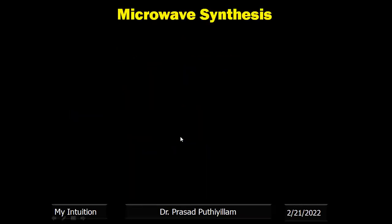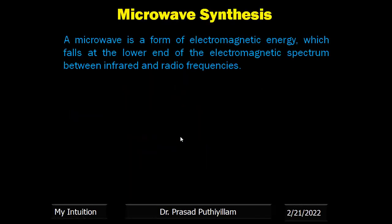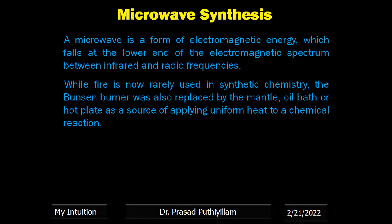Now, microwave synthesis. Microwave is a form of electromagnetic energy which falls at the lower end of the electromagnetic spectrum, between infrared and radio frequency. This particular form of energy is not strong enough to cause chemical degradation or any other unwanted reactions — it involves only heating; thermal energy or heat energy is produced.